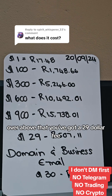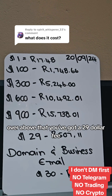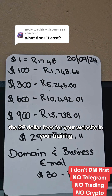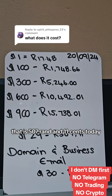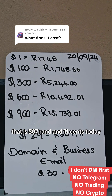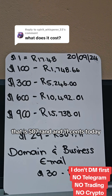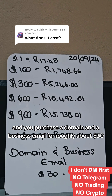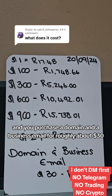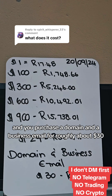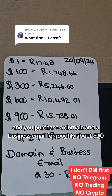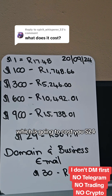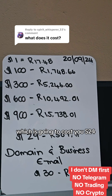Over and above that, you've got a $29 fee. The $29 fee is for your website and your training — that is 507 Rand and 11 cents today. And you purchase a domain and a business email for roughly about $30, which is going to cost you 524 Rand.